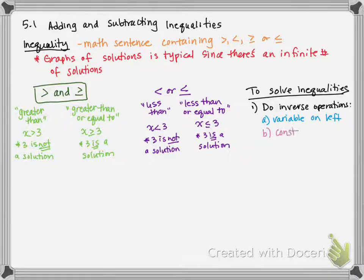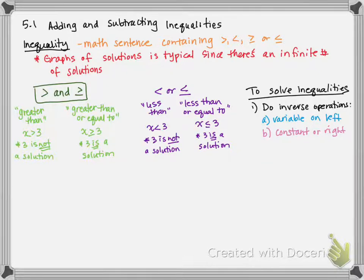The reason why we do this is: if you have your variable on the left of the inequality, just like I wanted you to have the variable on the left of the equation, because if you have your variable on the left of an inequality, then the inequality is actually pointing the direction your line should go.